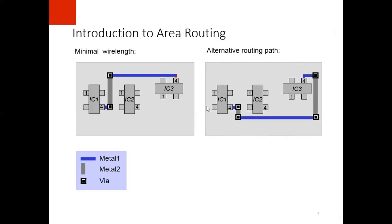There is an alternate routing path in which we can easily route net number one also, but it does not minimize the wire length. There can be different approaches to area routing according to the choice of the VLSI designer and it depends on his experience.